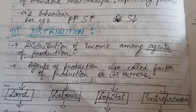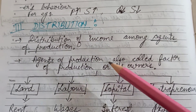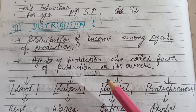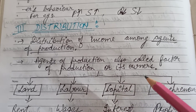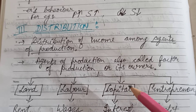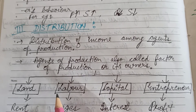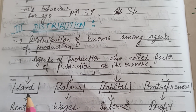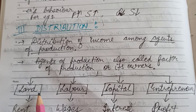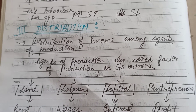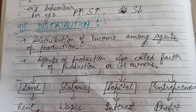Now comes the next component of economics, that is distribution. Before starting this, you must know about the agents of production or the factors of production. For producers to produce various finished products, they need some inputs or factors with which they carry out production activity. There are basically four types of factors of production: the first is land, then labor, capital, and entrepreneur. Land is used by the producer for carrying out the production activity, in return of which the land owners are provided with rent.